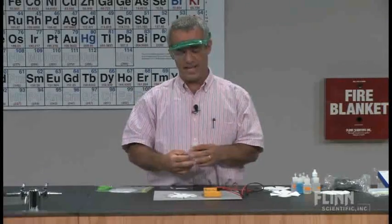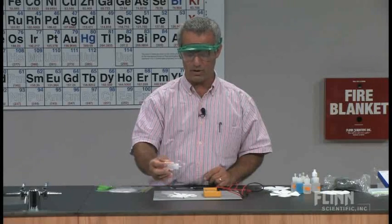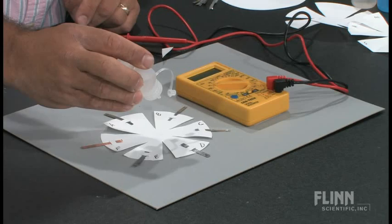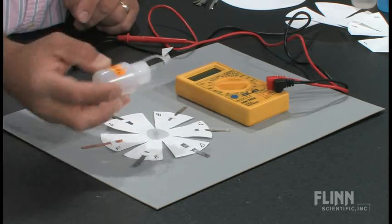You can simplify that quite a bit and go with much smaller quantities. These are all one molar solution. Here's my potassium nitrate, which is going to be the salt bridge in the middle. I'll put one, two, three, four, five drops of that.